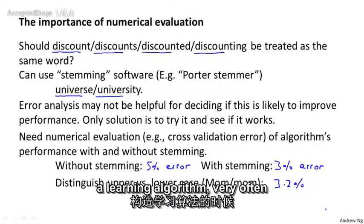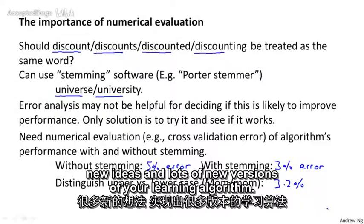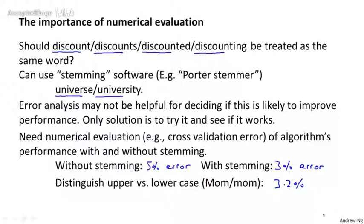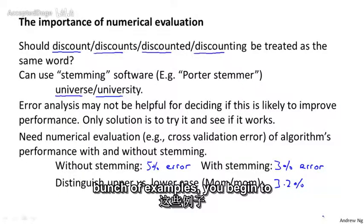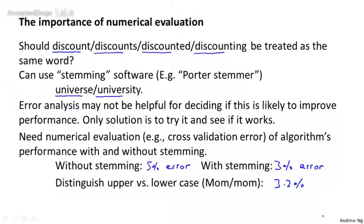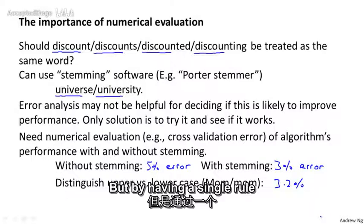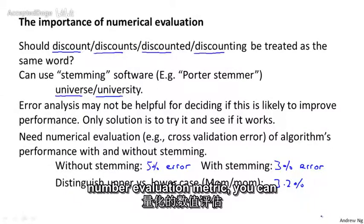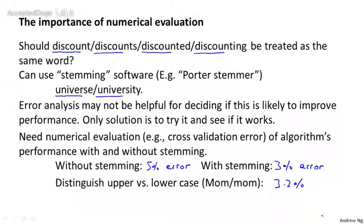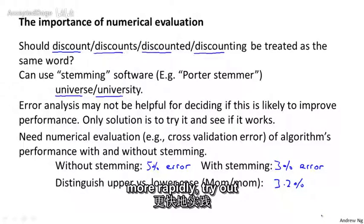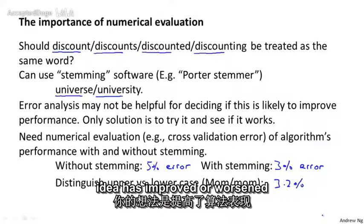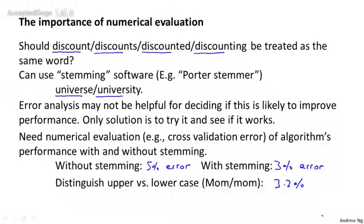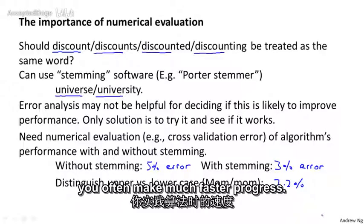So when you're developing a learning algorithm, very often you'll be trying out lots of new ideas and lots of new versions of your learning algorithm. If every time you try out a new idea, if you end up manually examining a bunch of examples again to see if it got better or worse, that's going to make it really hard to make decisions on do you use stemming or not, do you distinguish upper and lowercase or not. But by having a single real number evaluation metric, you can then just look and see, did the error go up or down? And you can use that to much more rapidly try out new ideas and almost right away tell if your new idea has improved or worsened the performance of the learning algorithm. And this will let you often make much faster progress.